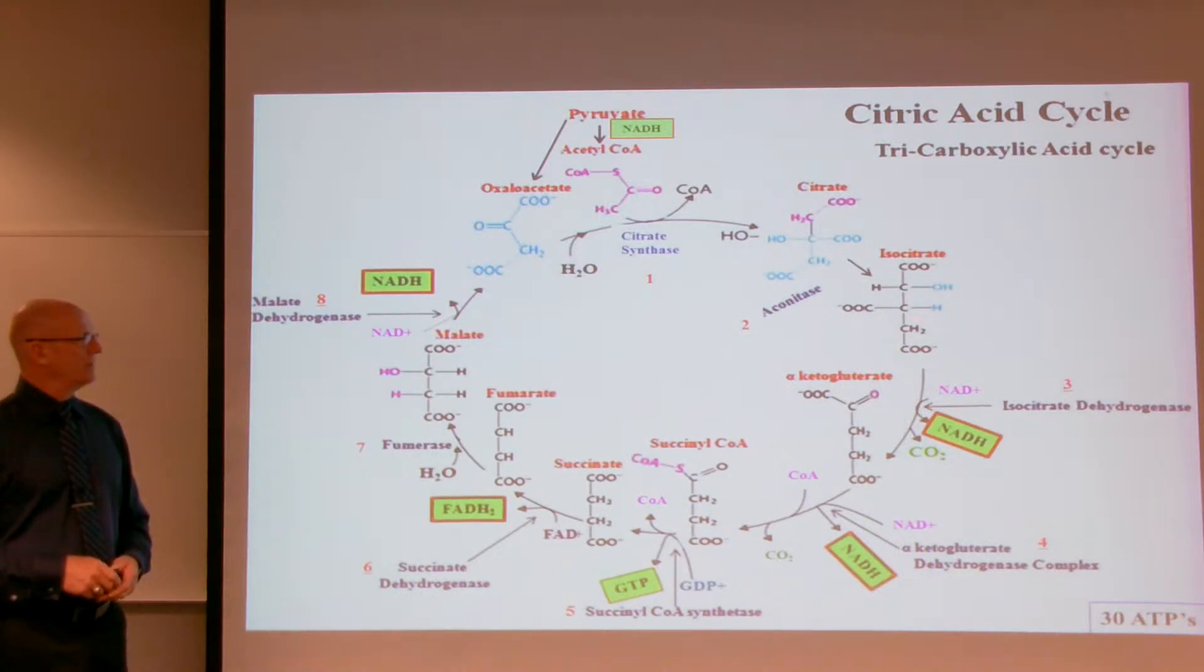And here we have the rearrangement of this citrate to isocitrate helps prepare this molecule for step three, so we can dehydrogenate it and decarboxylate it. So here, the enzyme in the third step, isocitrate dehydrogenase, will help oxidize isocitrate into alpha-ketoglutarate.